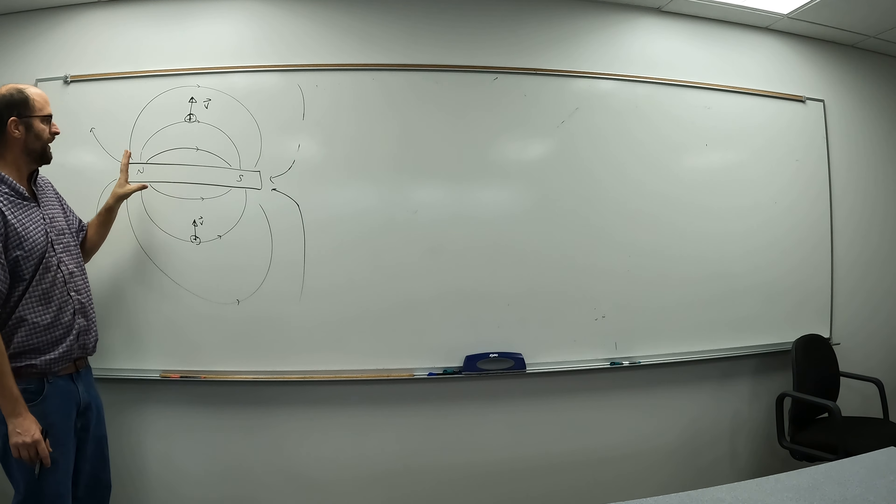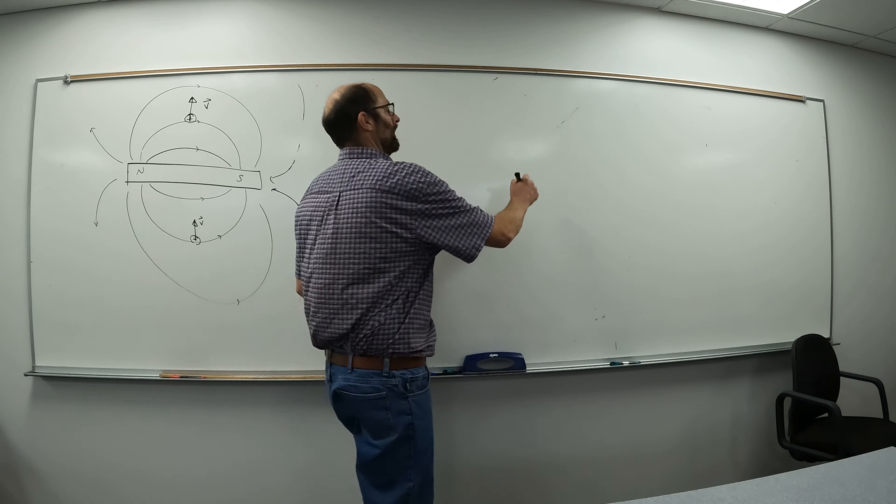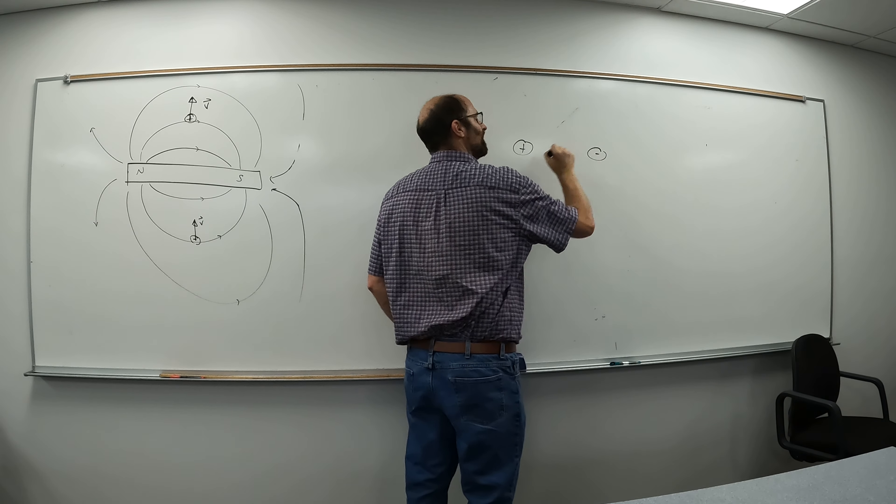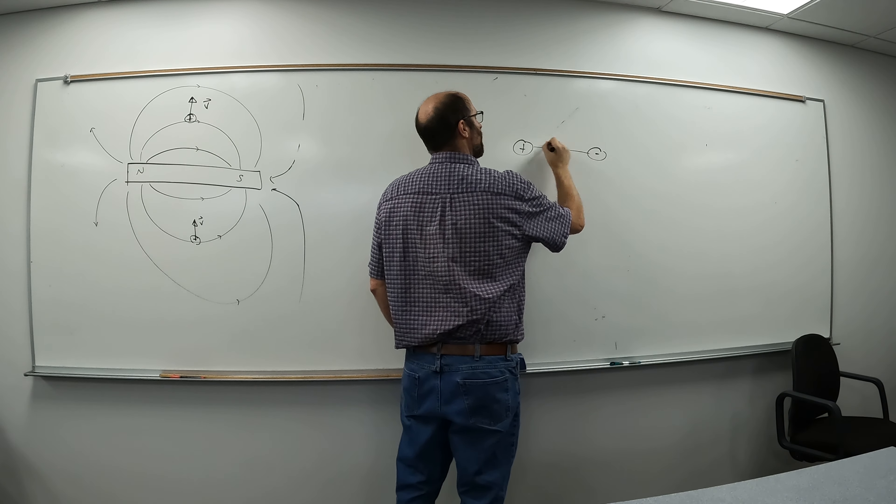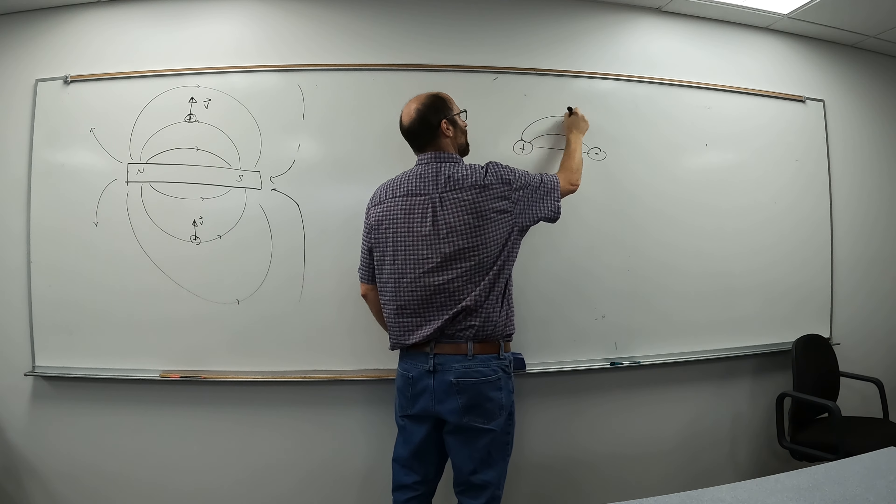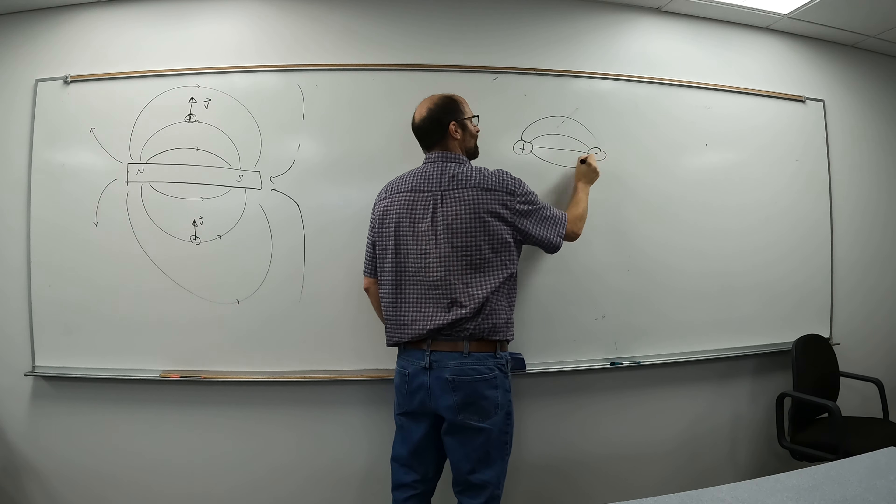If you've studied electric fields, you will notice that this field configuration looks a lot like what is called the electric dipole. An electric dipole is when you have a plus and a minus fairly close together, and the field lines around a dipole look something like this.